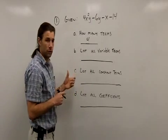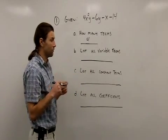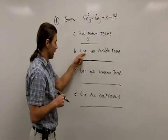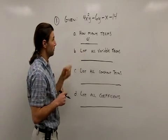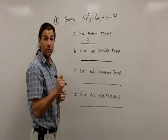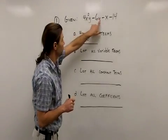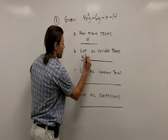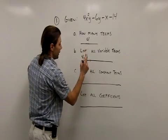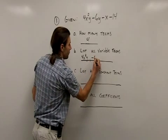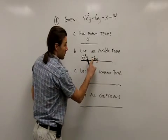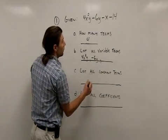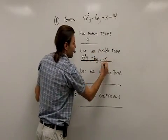Next question is to list the variable terms. Notice I'm not asked to identify how many variable terms, but in fact to list them. A variable term is anything that has a variable in it. So I have one, two, three variable terms, but I need to list these. So my first variable term, 4x²y. My next variable term, -6y. Be sure to include the sign as you list it. The last variable term is -x.